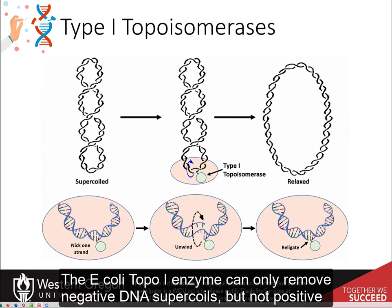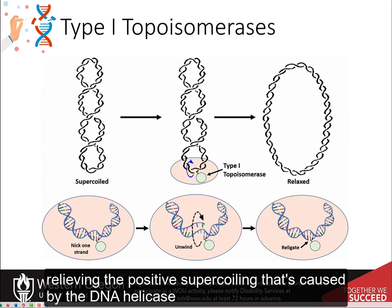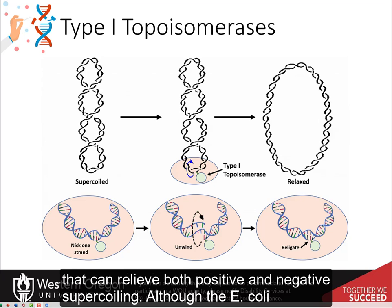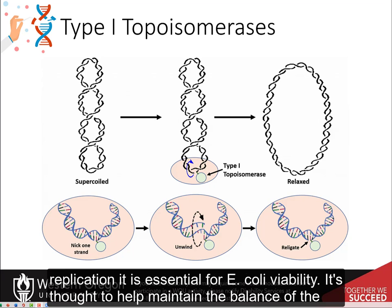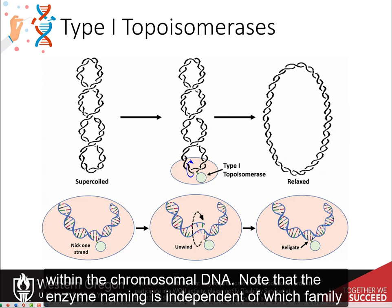The E. coli topo-1 enzyme can only remove negative DNA supercoils, but not positive ones. Thus, the enzyme is not involved in relieving the positive supercoiling caused by the DNA helicase during replication. This is in contrast to the eukaryotic topo-1 enzyme, which can relieve both positive and negative supercoiling. Although the E. coli topoisomerase 1 is not directly involved in relieving the tension caused during DNA replication, it is essential for E. coli viability. It's thought to help maintain the balance of the actions of the type 2 topoisomerases and help maintain optimal supercoiling density within the chromosomal DNA.